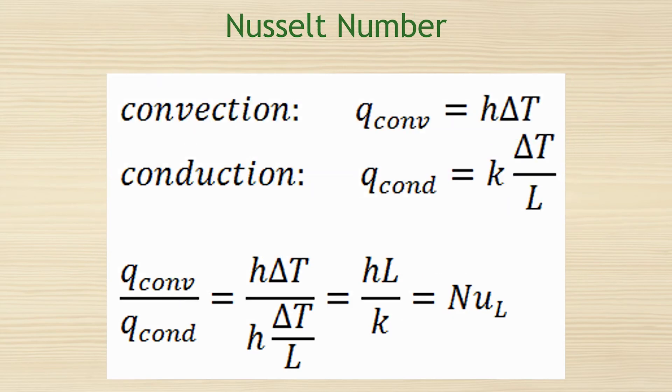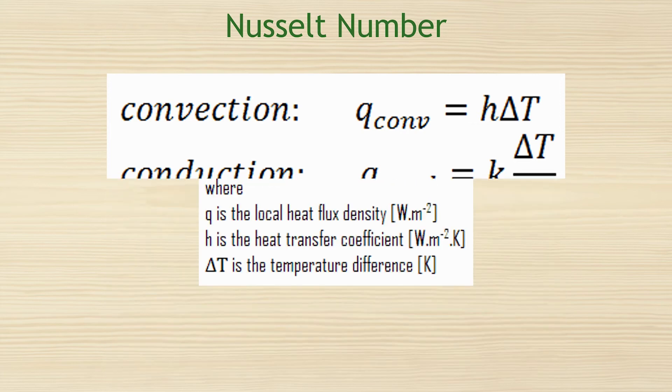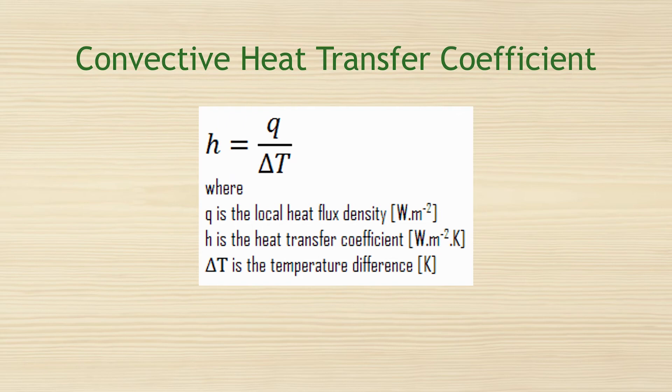The Nusselt number describes the ratio of convective heat transfer compared to heat conduction, where X denotes the characteristic length of the system. h is the convective heat transfer coefficient and its definition is given like this formula. You can define the convective heat transfer coefficient h as the heat transfer rate per unit surface area and unit temperature difference between a solid surface and a fluid. Q is the local heat flux. Delta T is the difference between wall temperature T-wall and the bulk temperature.